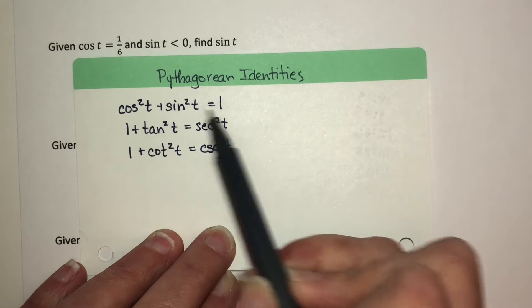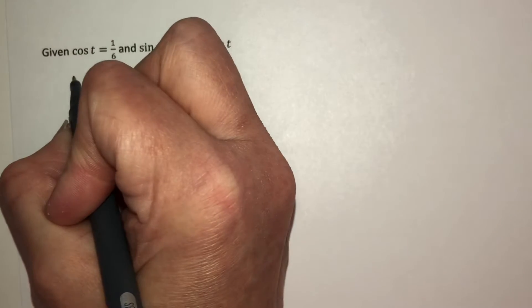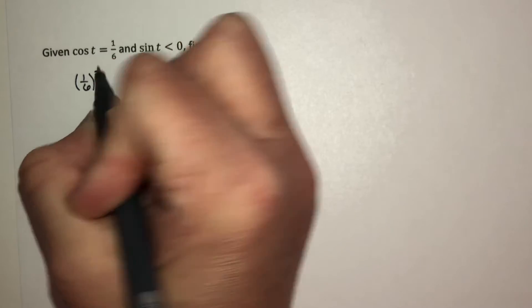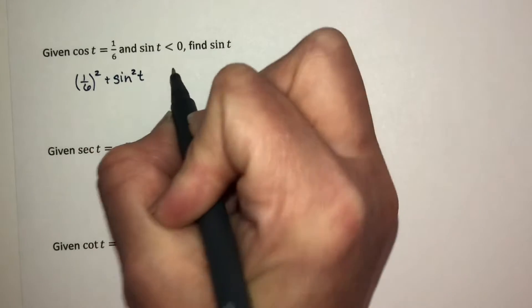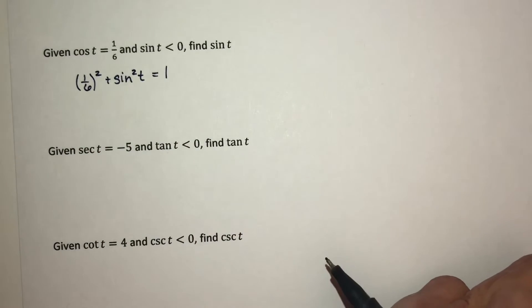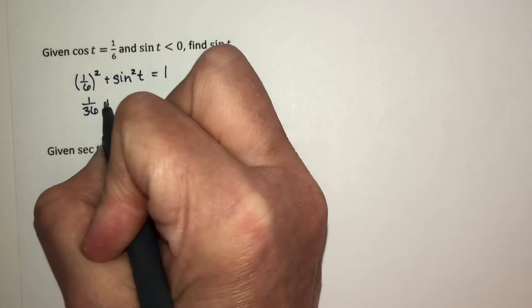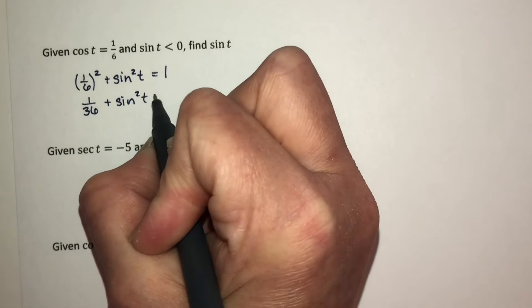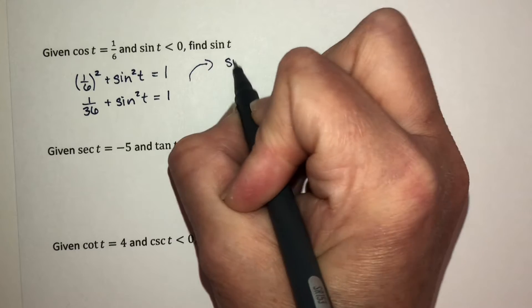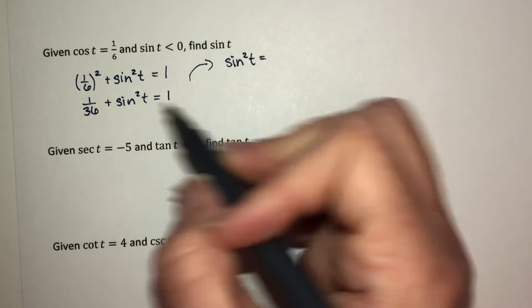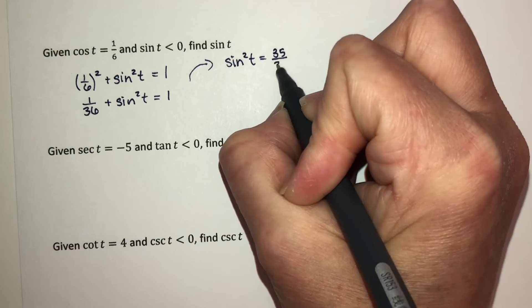I'm going to use the Pythagorean identity and plug in the known values. I know that (1/6)² plus sine squared of t equals 1. That gives me 1/36 plus sine squared of t equals 1. Subtracting 1/36 from both sides, sine squared of t equals 35/36.